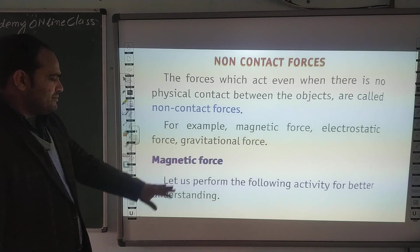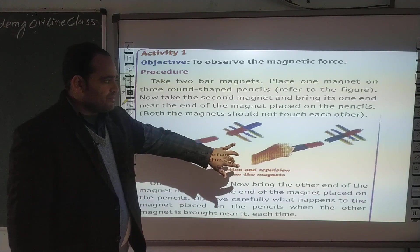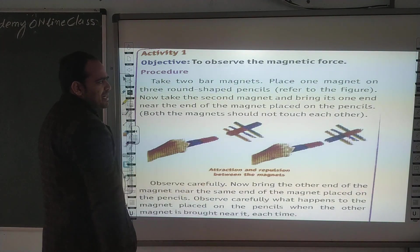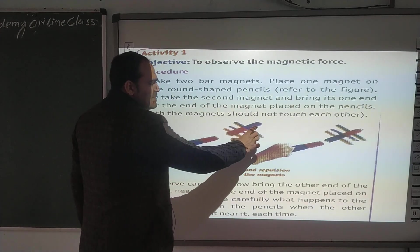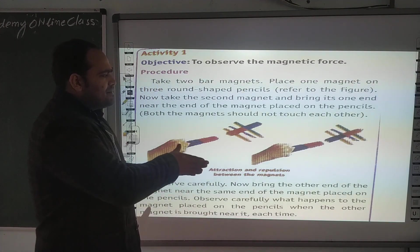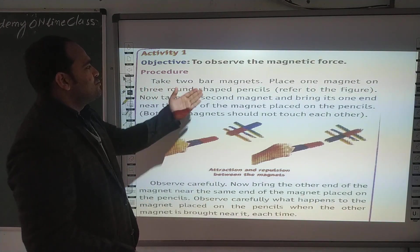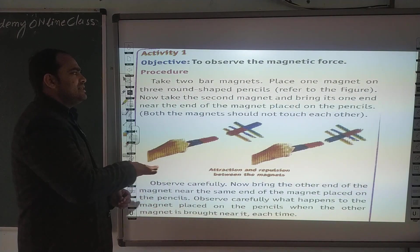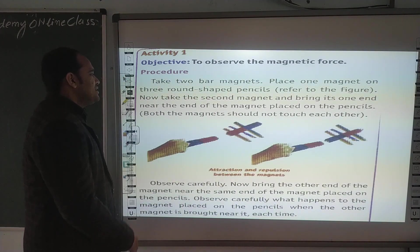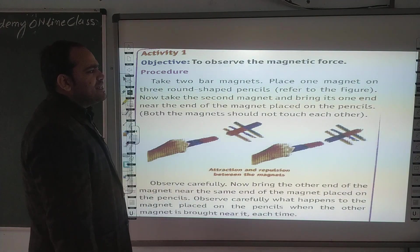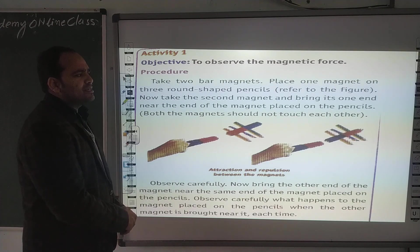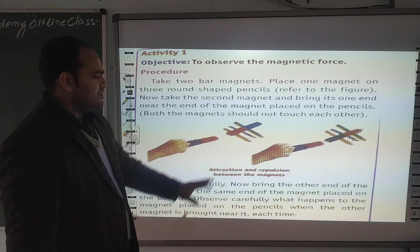Magnetic forces. Let us perform the following activity. Suppose that we have a bar magnet, और दूसरे end पे भी एक bar magnet है, और उसको pencils नीचे रखे हुई है, magnets को ऊपर रख दिया। Take two bar magnets. Place one magnet on three round pencils. Take a second magnet and bring one end near the end of the magnet placed on the pencil. Both the magnets should not touch each other।